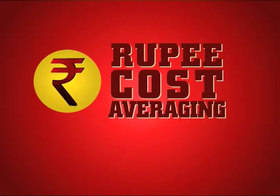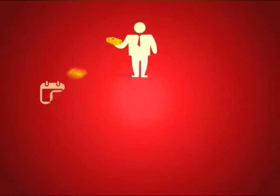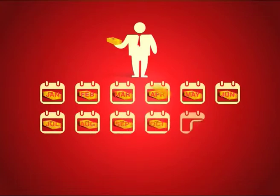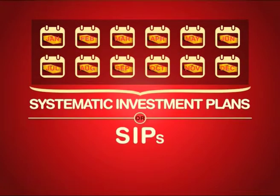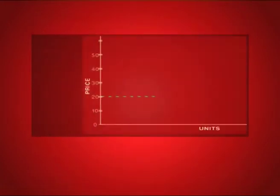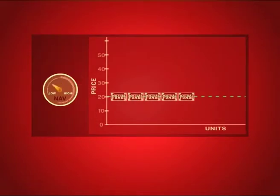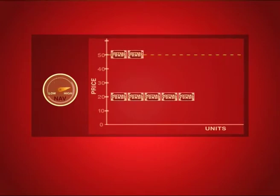What is rupee cost averaging? If one invests regularly through systematic investment plans, or SIPs, for the same amount every month, one is able to buy more mutual fund units when the net asset value, or NAV, is lower, and fewer units when the NAV is higher.